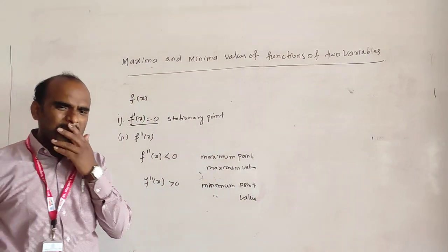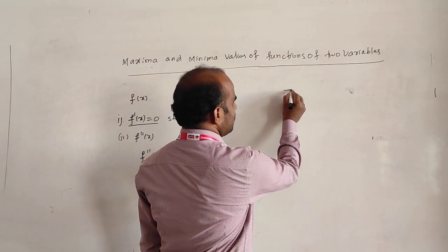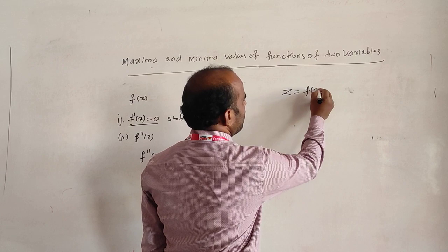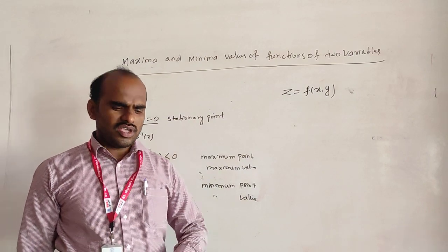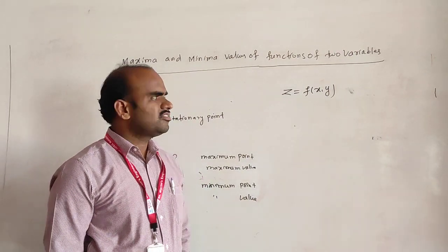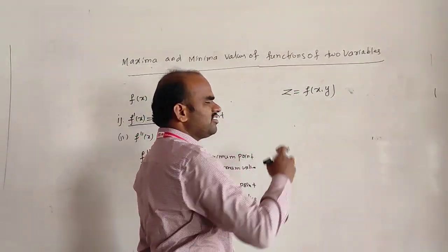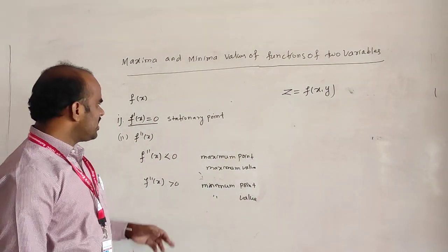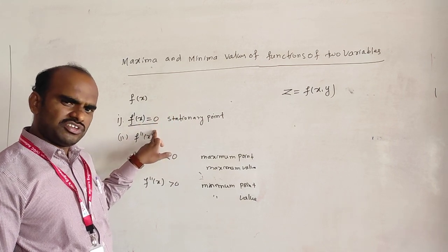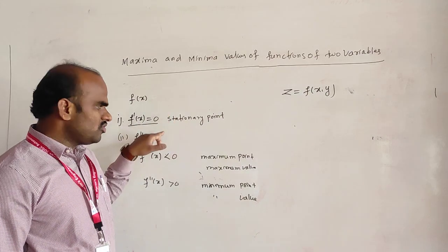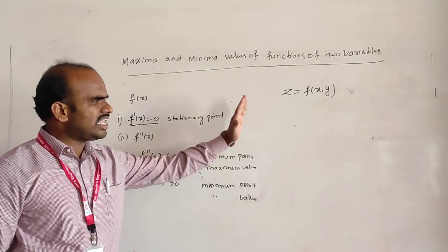The same concept applies to functions of two variables. Suppose we want to find the maximum or minimum value of z equal to f of x comma y, where x and y are two independent variables. We perform the first-order derivatives and set them equal to zero to get stationary points. At each stationary point we check whether the second-order derivative is positive or negative to decide maximum or minimum.